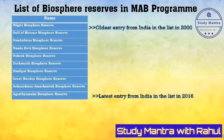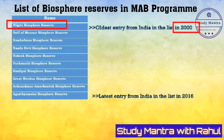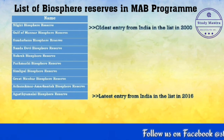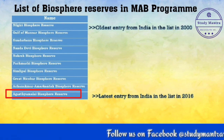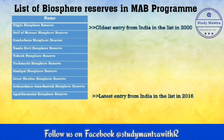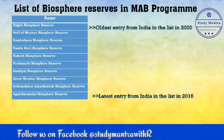Now let's see which 10 biosphere reserves of India come under UNESCO's Man and Biosphere (MAB) reserve program. The list is arranged in order — you only need to remember the first and second dates; everything else regarding dates is not required. The 10 are: Nilgiri, Gulf of Mannar, Sundarbans, Nanda Devi, Nokrek, Pachmarhi, Simlipal, Great Nicobar, Achanakmar-Amarkantak, and Agasthyamalai Biosphere Reserve. The last one, Agasthyamalai, was added in 2016.